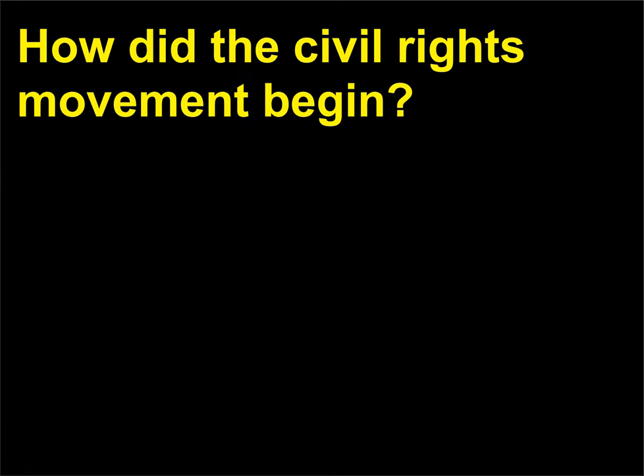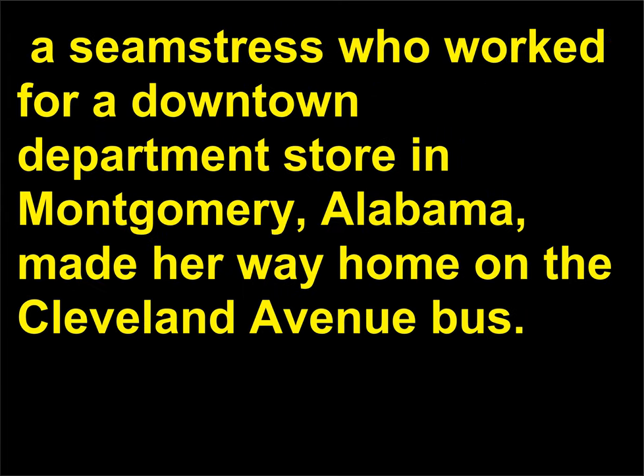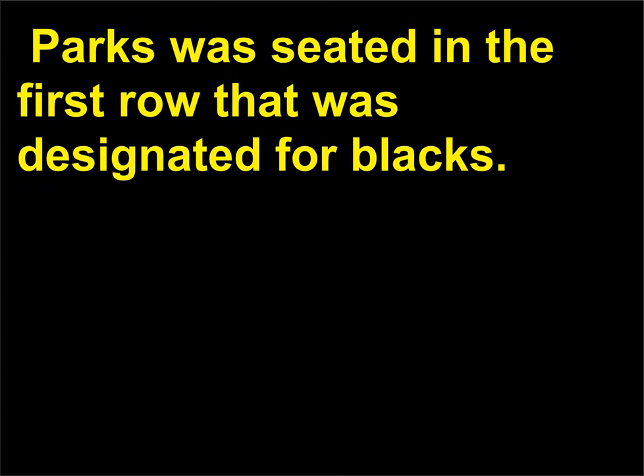How did the Civil Rights Movement begin? It began on Thursday, December 1, 1955, as Rosa Parks, born 1913, a seamstress who worked for a downtown department store in Montgomery, Alabama, made her way home on the Cleveland Avenue bus. Parks was seated in the first row that was designated for blacks,